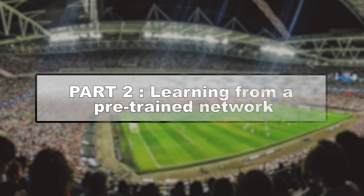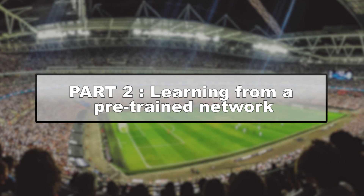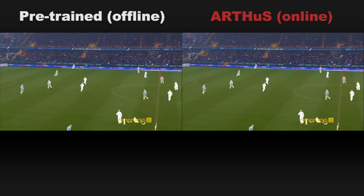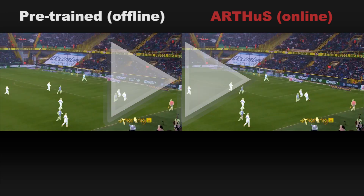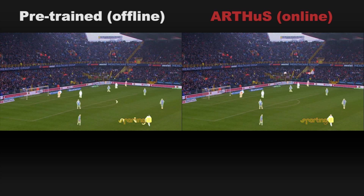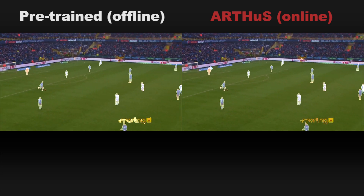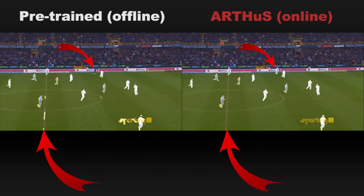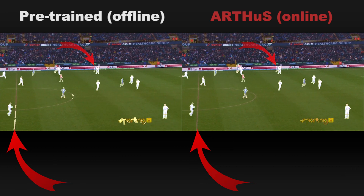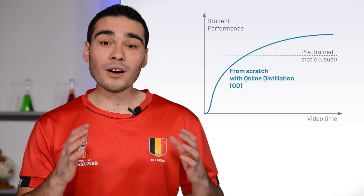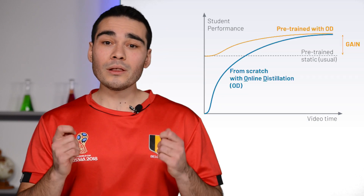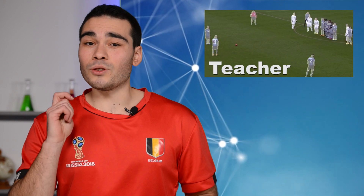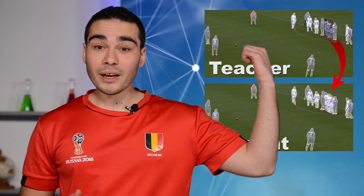Now let's see what happens if we pre-train the network and compare offline distillation with online distillation. At first, the networks are the same and produce the same segmentation maps. The student trained online keeps on producing better segmentation during the match, with fewer false positives such as field lines no longer detected as humans. We can also show that online distillation outperforms offline distillation, where the network is trained beforehand on several other soccer matches. Interestingly, the student may even surpass its teacher in some particular cases.